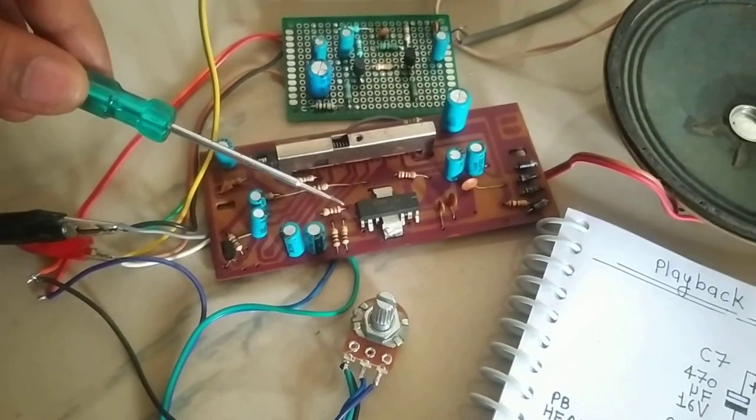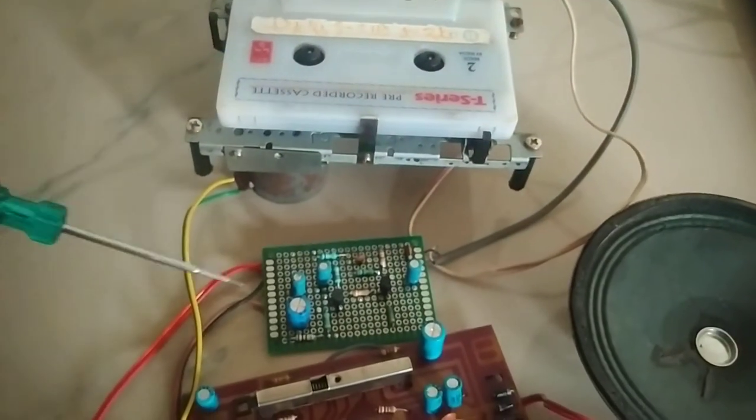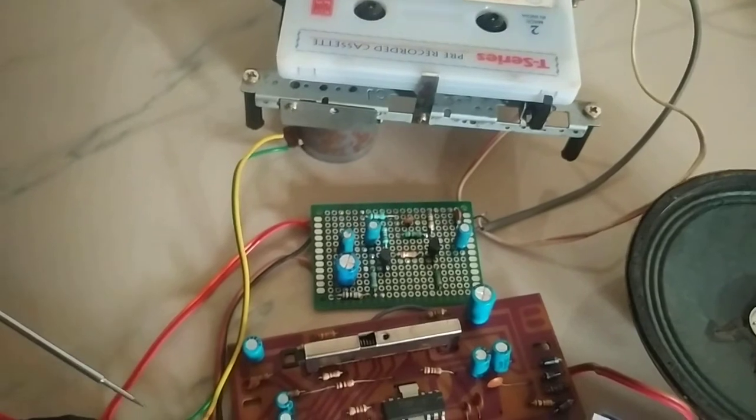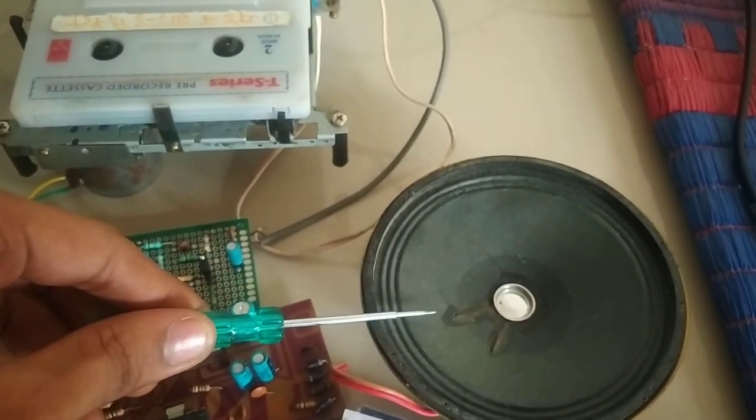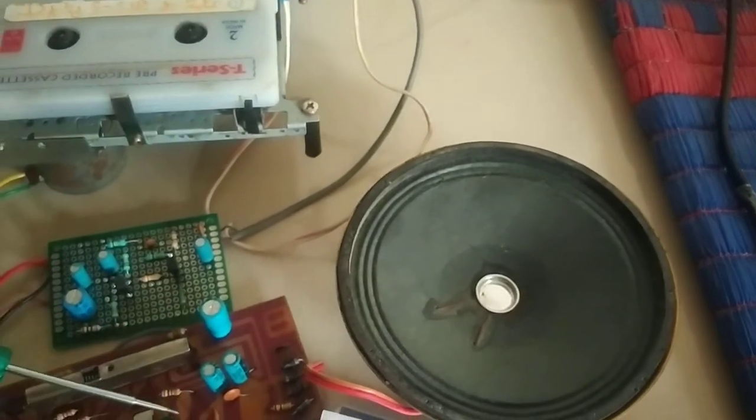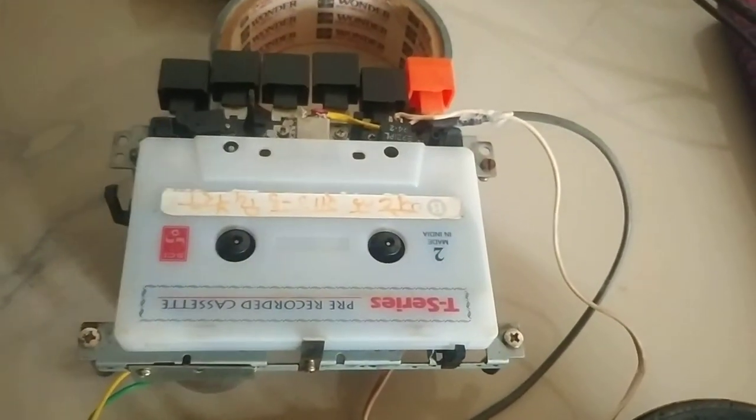I am powering the power amplifier, preamplifier, and the cassette motor with the same power supply. Here is the loudspeaker. I have connected a 4 ohm 5 watt loudspeaker to the audio amplifier board and here is the cassette mechanism.